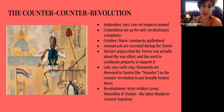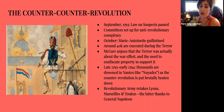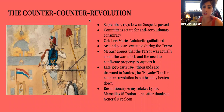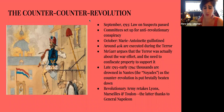In September 1793, the Law of Suspects was passed, and committees were set up to watch for any anti-revolutionary conspiracy — a kind of witch-hunt atmosphere. In October, Marie Antoinette was guillotined, and around 40,000 were executed during the Terror. Historian Magar argues that the terror was less about bloodthirsty motivation and more about the war effort — they needed to confiscate property to support the war. During the winter of 1793-1794, thousands were drowned in Nantes in what was called the Noyades — placed on ships and dropped into the Loire River with rocks tied to them. Innocent people, including children and infants, were killed in these purges.